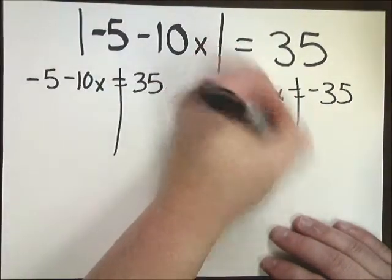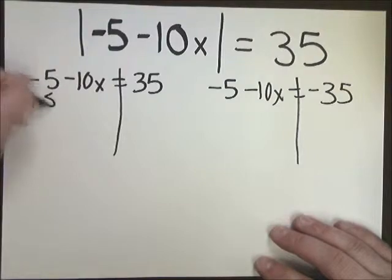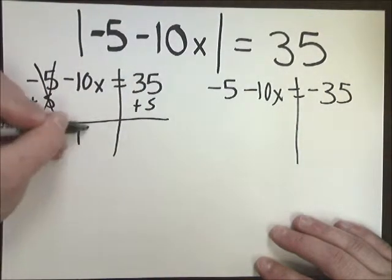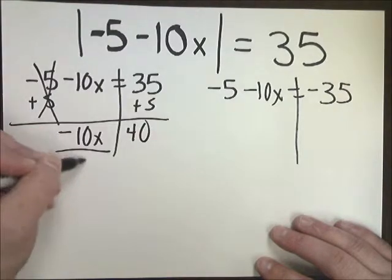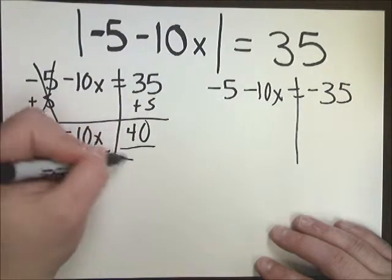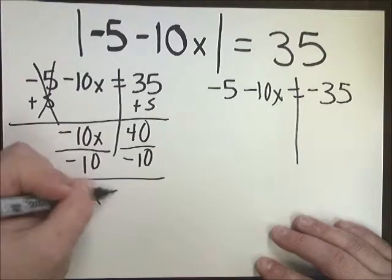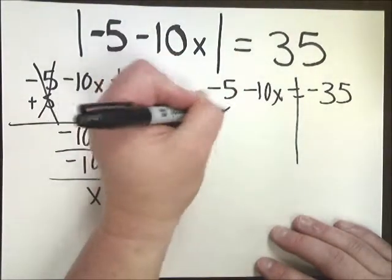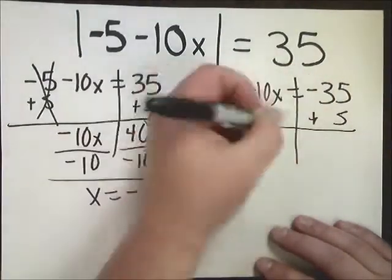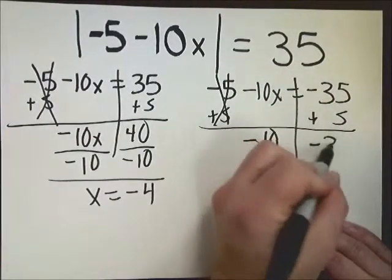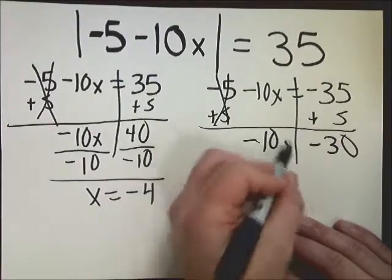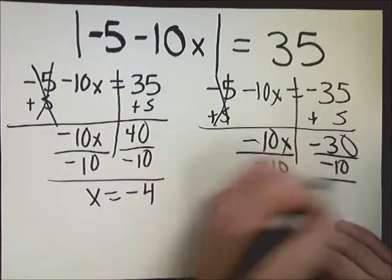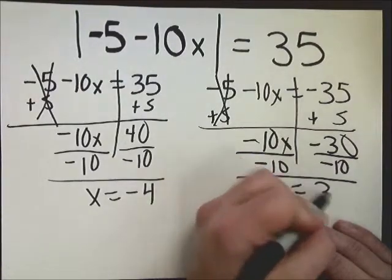Now, solve the equations as normal once you split them out. Add 5 to both sides. Negative 10x equals 40. I'm going to divide by negative 10 here and here. On the other side, plus 5. This gives me negative 30. I forgot to bring my x down. Divide by negative 10 here. X is equal to 3.